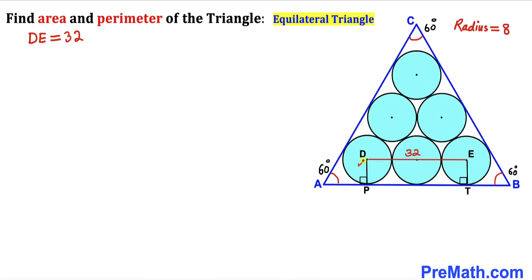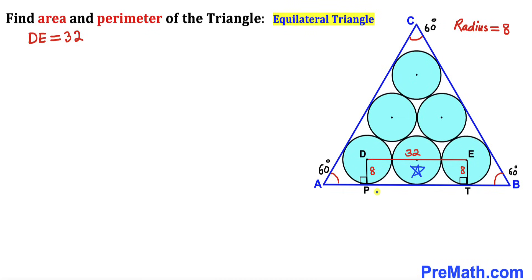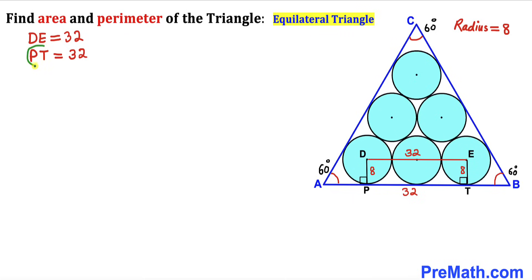I have dropped perpendiculars DP and DT. Since these are radii, each is 8 units. By the circle theorem, the angle between a radius and a tangent line is always 90 degrees, so these angles are each 90 degrees. We are dealing with rectangle PTED, meaning opposite sides DE and PT are equal. Since DE = 32, then PT = 32 units as well.